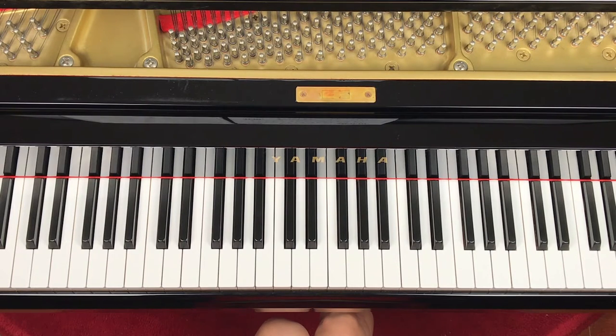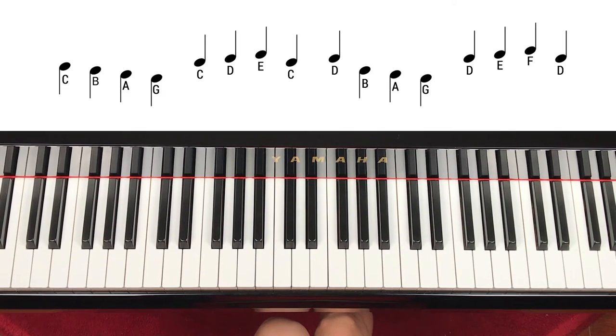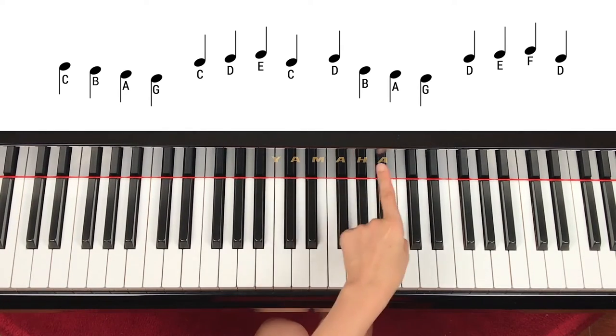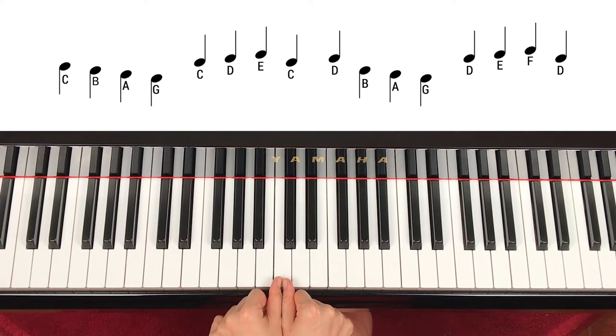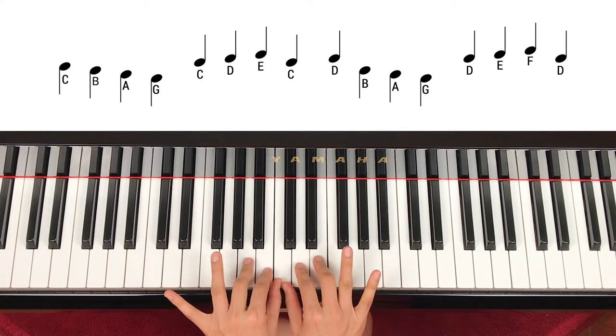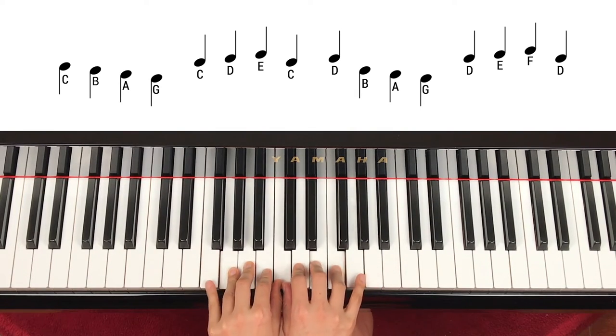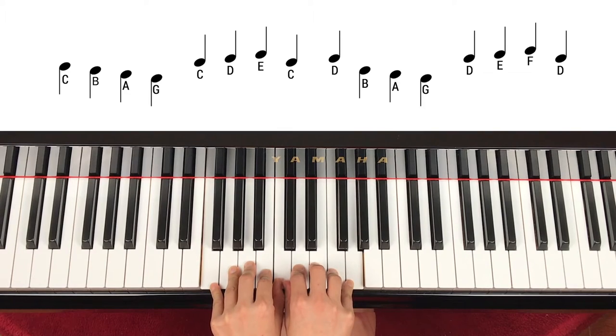First, we will start reviewing last time's lesson, playing by note names. Find hand position sharing middle C. So place both hands on middle C, finger number one, thumb on middle C, two, three, four, five. This is hand position.